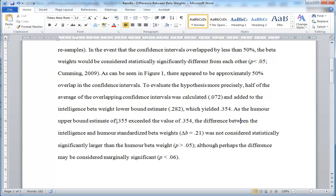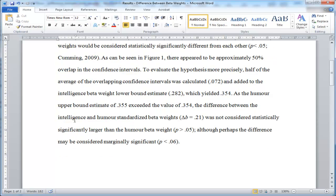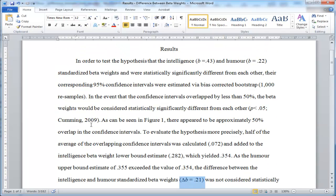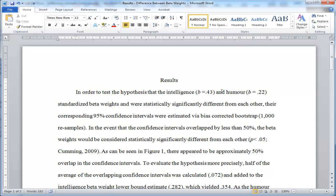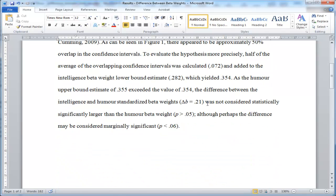As the humor upper bound estimate of 0.355 exceeded the value of 0.354, the difference between the intelligence and humor standardized beta weights, which is actually equal to 0.21, so the difference between 0.43 and 0.22 is equal to 0.21, was not considered statistically significant.